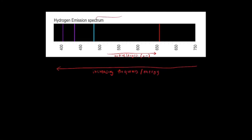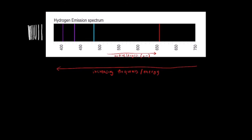As wavelength decreases — or as frequency and energy increase — the space between the coloured lines of the hydrogen emission spectrum actually decreases. There are multiple other lines invisible to the human eye, and with theoretical lines drawn in, the gap between lines keeps getting smaller and smaller until the lines appear continuous. The point where this spectrum looks continuous is known as the convergence limit, where the lines converge.